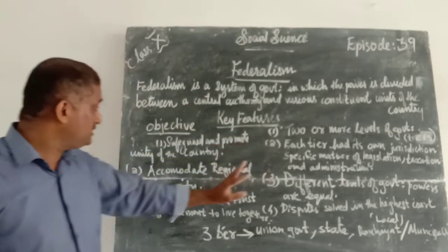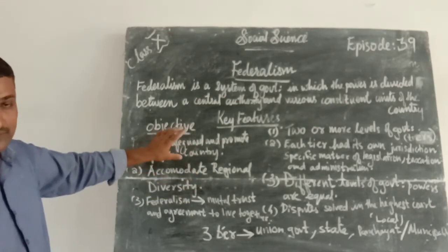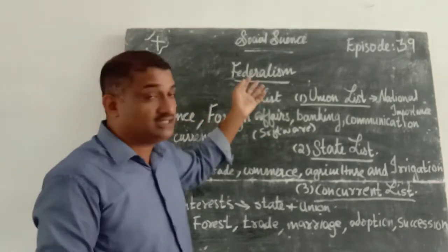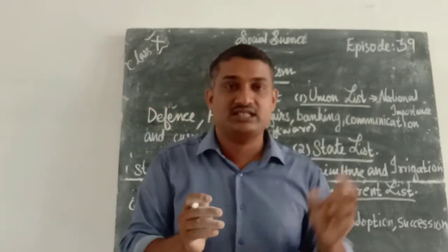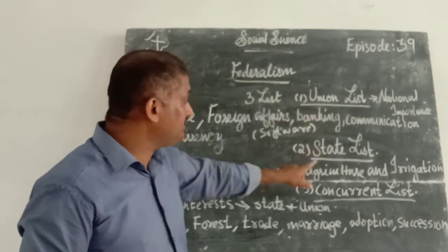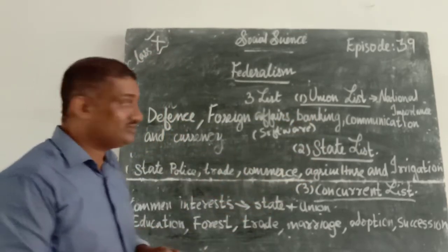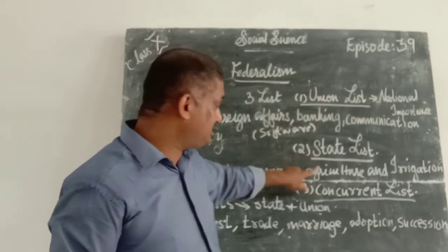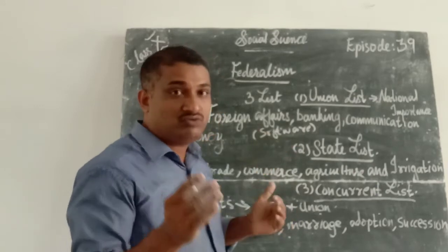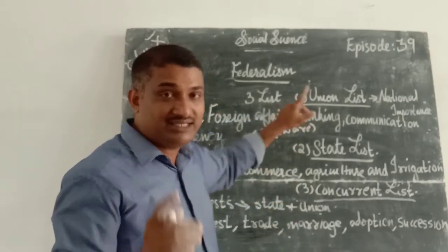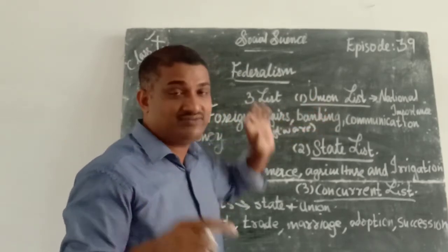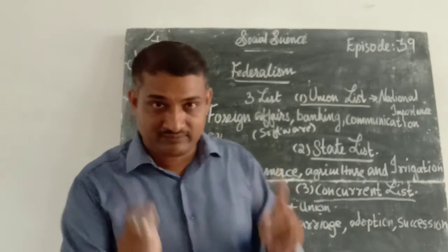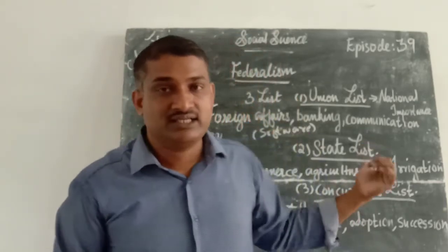These are all the objectives of federalism. First we discussed the features, next the objectives. Next we are studying about federalism — which can be divided into three lists. Which are the three lists in federalism? First one is Union List, second one is State List, and third one is Concurrent List.